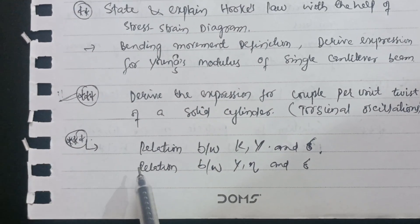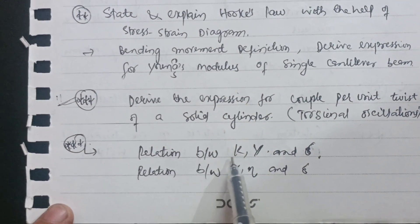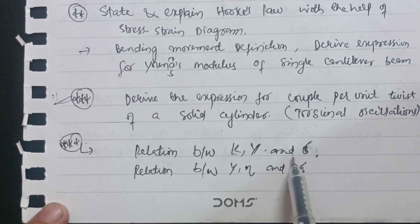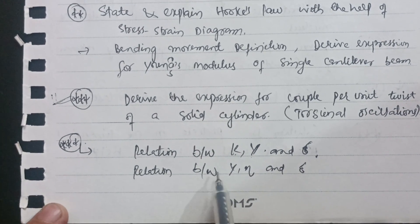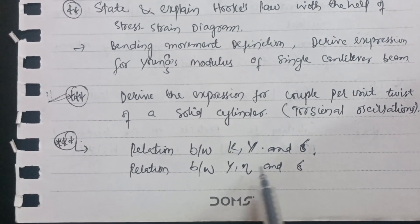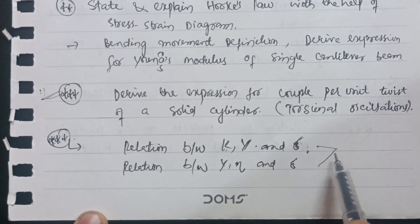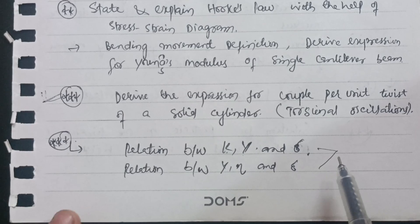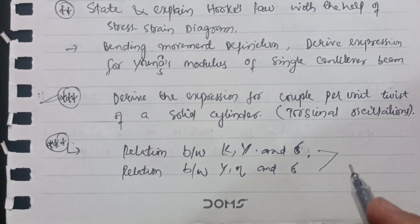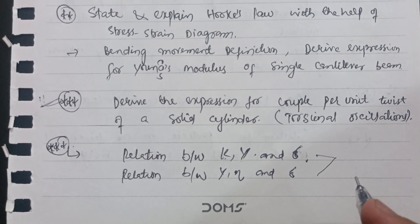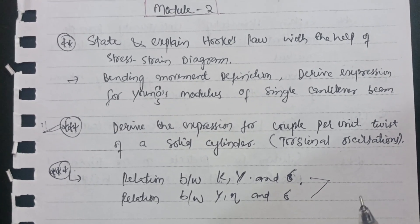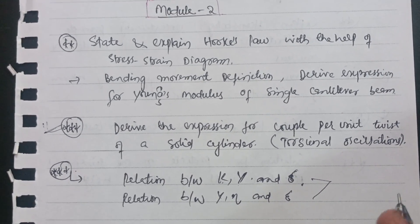There are also two important derivations in Module 2: the relation between Young's modulus, bulk modulus, and Poisson's ratio; and the relation between Young's modulus, rigidity modulus, and Poisson's ratio. Focus on both of these derivations. At least one of them will definitely appear in the exam, so covering both ensures you can tackle Module 2 confidently.